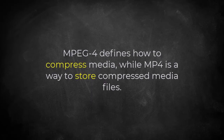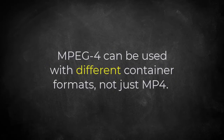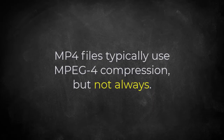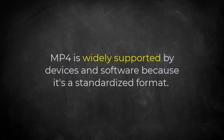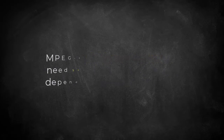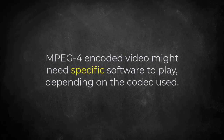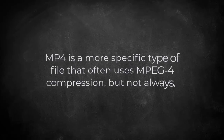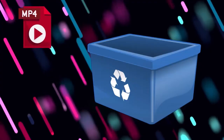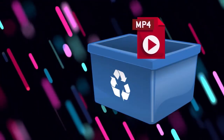Here is a breakdown of the key differences. MPEG-4 defines how to compress media, while MP4 is a way to store compressed media files. MPEG-4 can be used with different container formats, not just MP4. MP4 files typically use MPEG-4 compression, but not always. MPEG-4 is widely supported by devices and software because it is a standardized format, but depending on the codec used, MPEG-4 encoded video might need specific software to play. In short, MP4 is a more specific type of file that often uses MPEG-4 compression, but not always, and MP4 is the more common container format for video and audio.